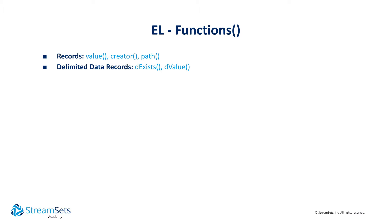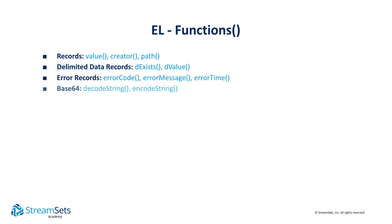In other words, the StreamSets EL is contextual to the feature we are configuring. Error record functions allow error code and error message extraction. Base64 functions allow us to encode and decode data in Base64. Data category functions allow data validation and data part extraction, such as extracting an area code from a phone number.